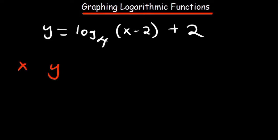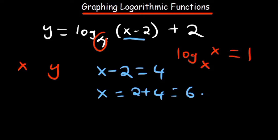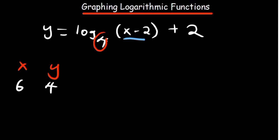The first thing we said is we need to make sure the base is the same as what's in the brackets, because when they are the same, this is equal to 1. So let's get what's in the brackets here: we have x minus 2. When x minus 2 equals 4, we equate it to 4. This is going to be true when x is 2 plus 4, which is 6. So when x equals 6, our y is going to be — the log part equals 1, plus 2 — which is a point we've come up with.